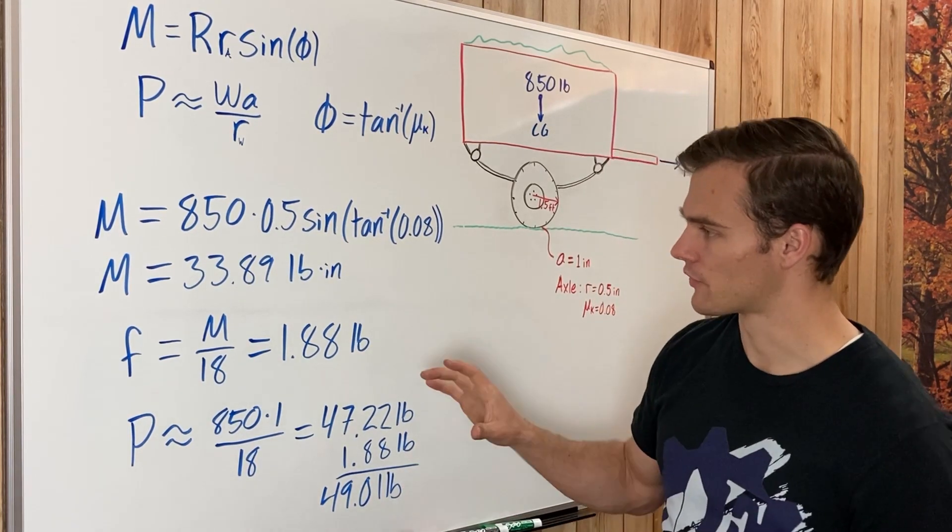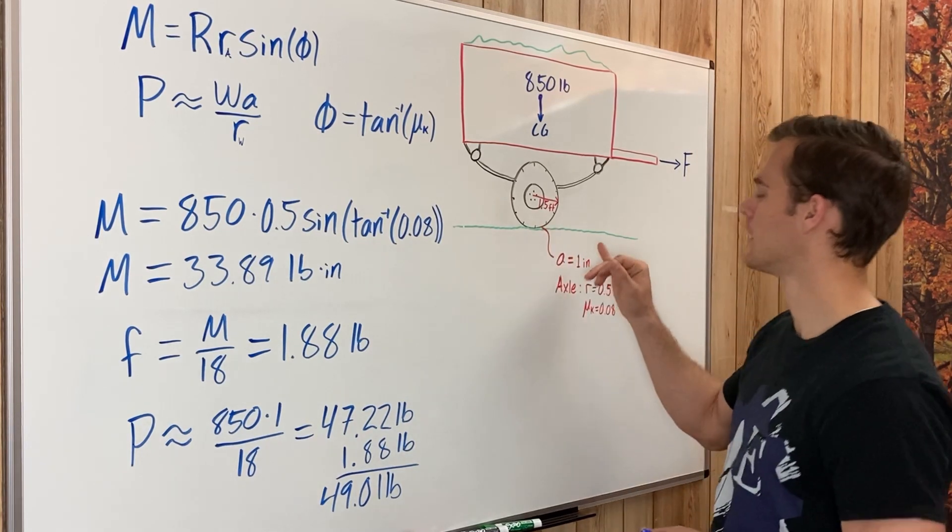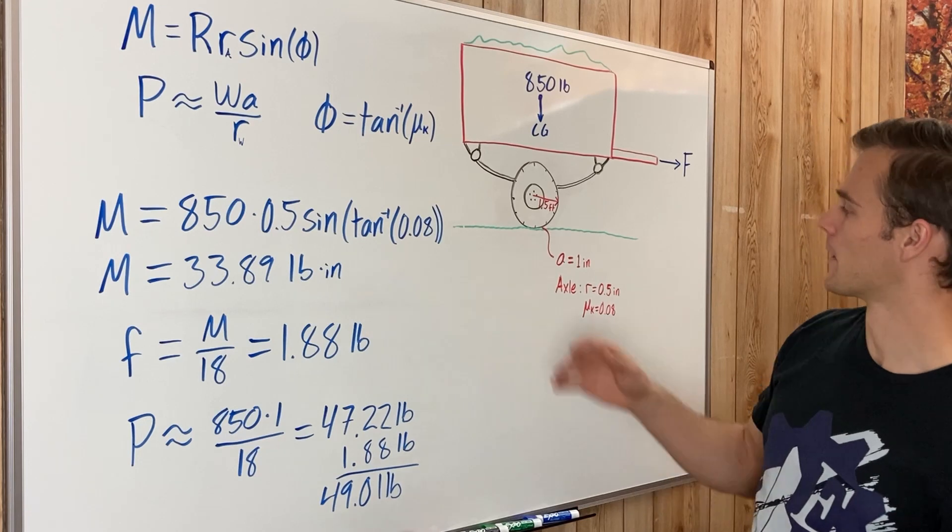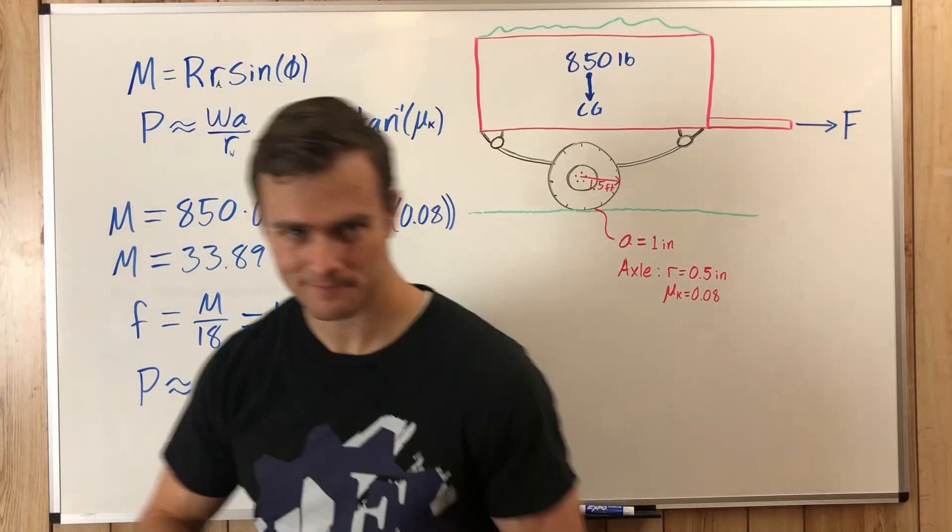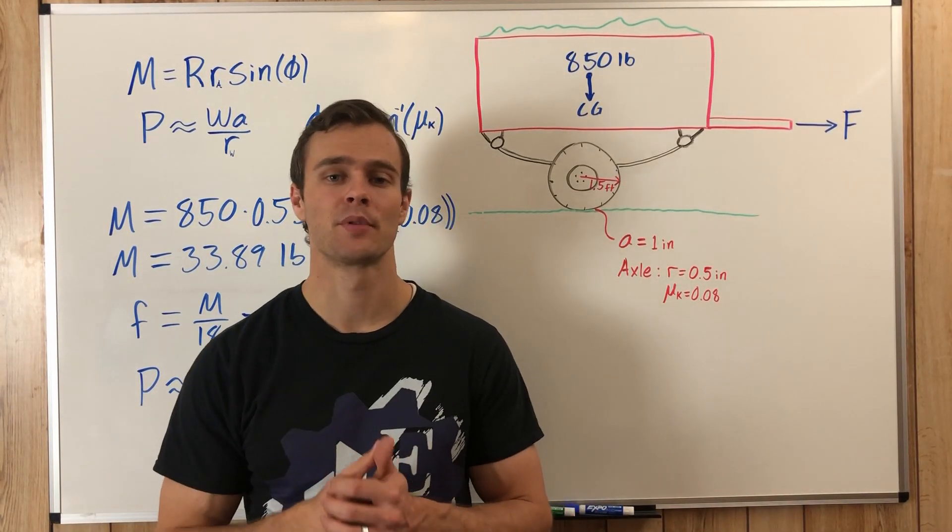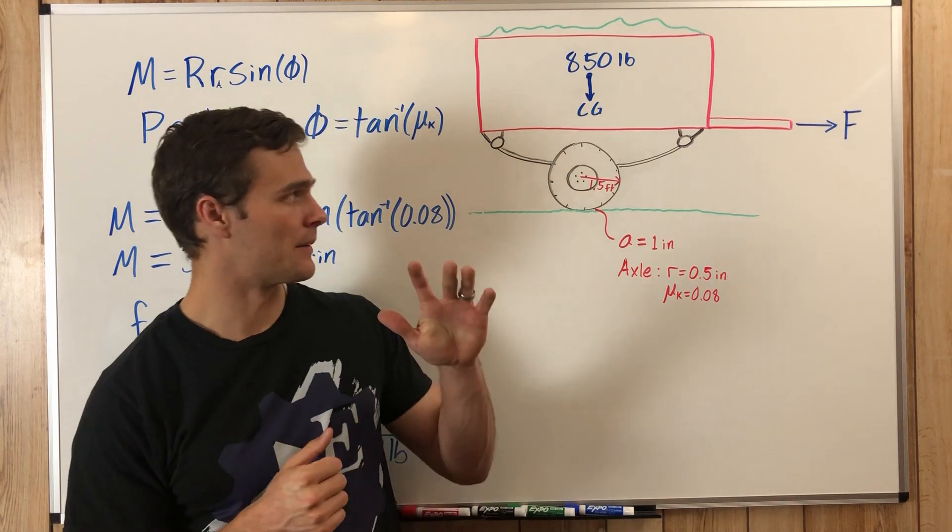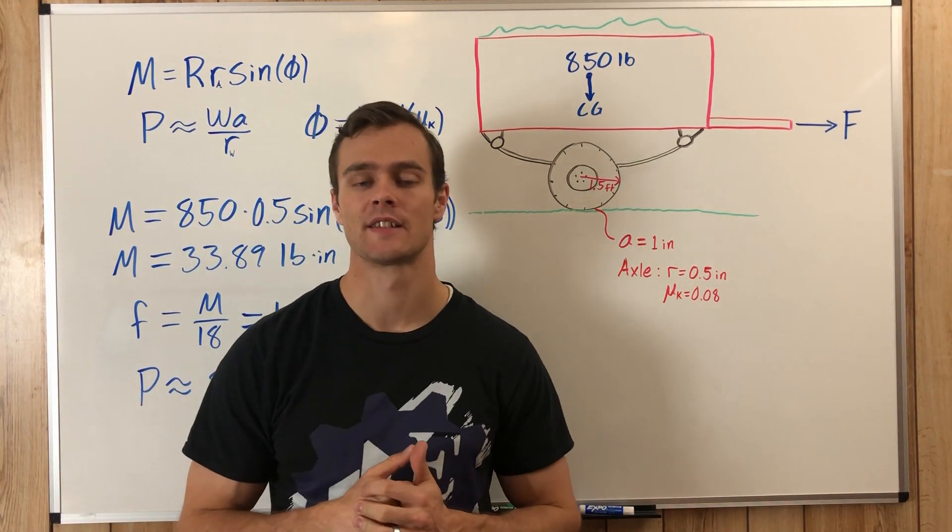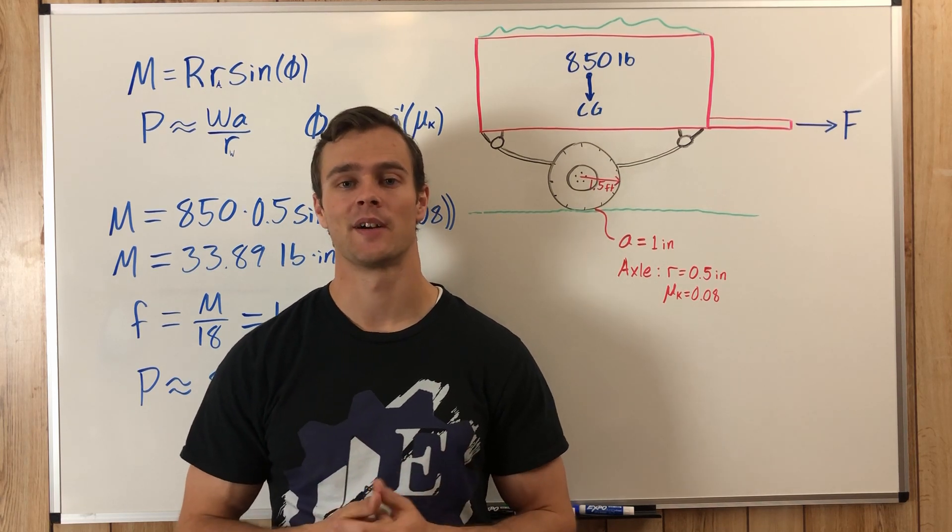Almost 50 pounds to be able to pull this trailer at a constant speed and therefore overcoming those frictional forces. So there's a pretty simple example problem combining both frictional forces in journal bearings and rolling resistance. I hope you found this helpful. If you did, hit that like button.